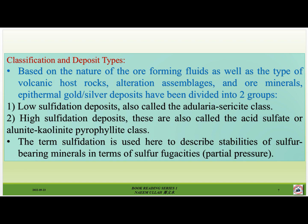Classification and deposit types. Based on the nature of the ore-forming fluids as well as the type of volcanic host rocks, alteration assemblages and ore minerals, epithermal gold-silver deposits have been divided into two groups: number one, low sulfidation deposits, also called the adularia-sericite class; and number two, high sulfidation deposits, also called the acid sulfate or alunite-kaolinite-pyrophyllite class. The term 'sulfidation' is used to describe the stabilities of sulfur-bearing minerals in terms of sulfur fugacities and partial pressure.